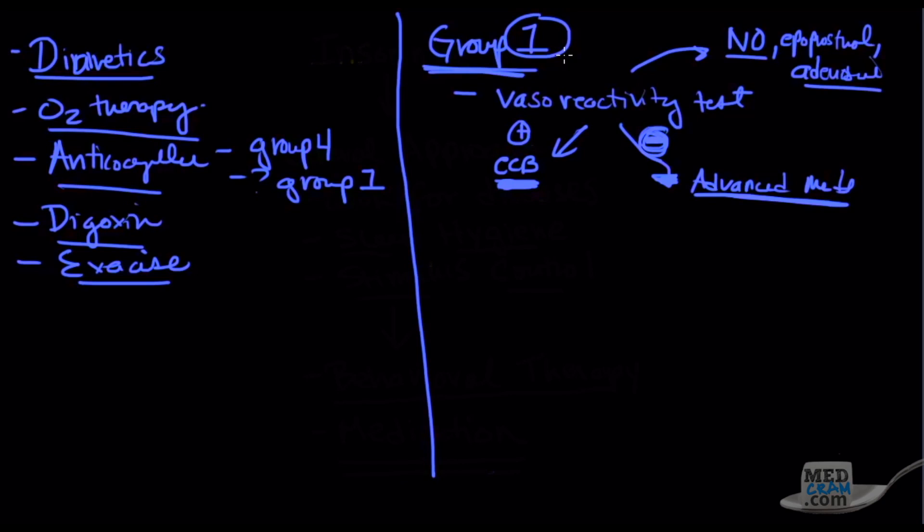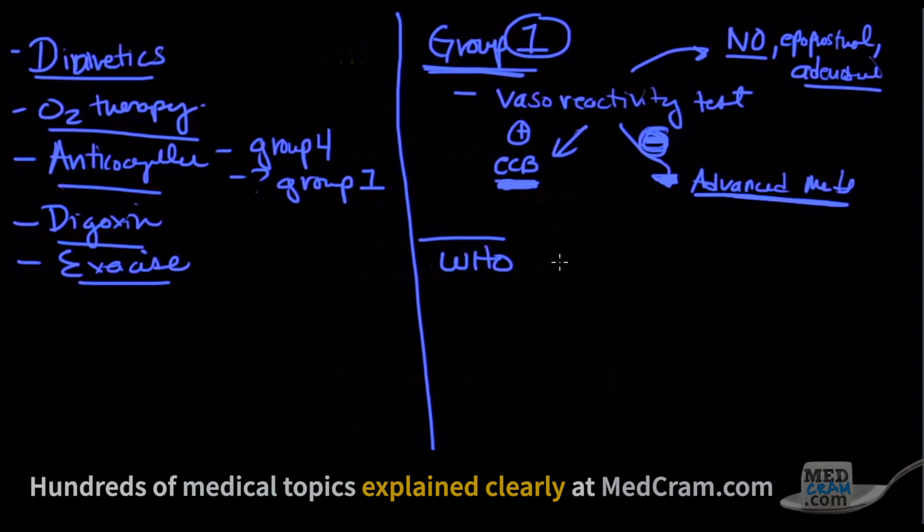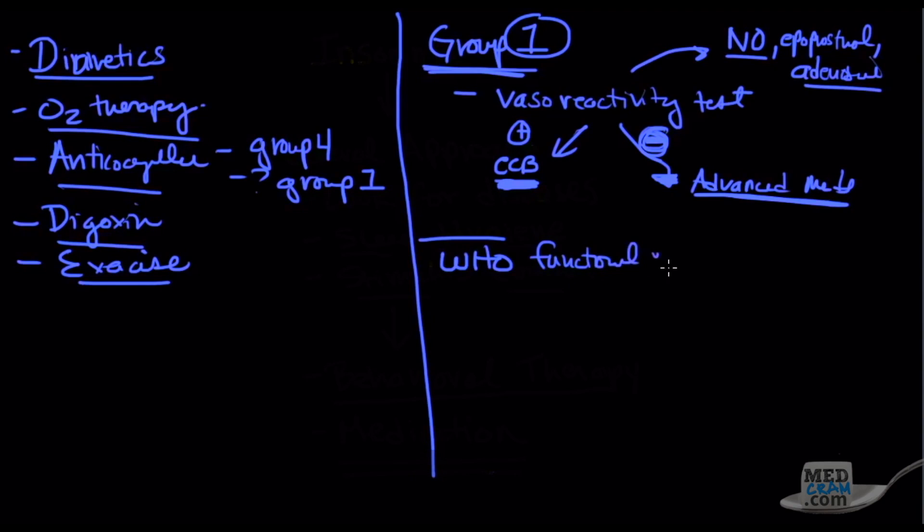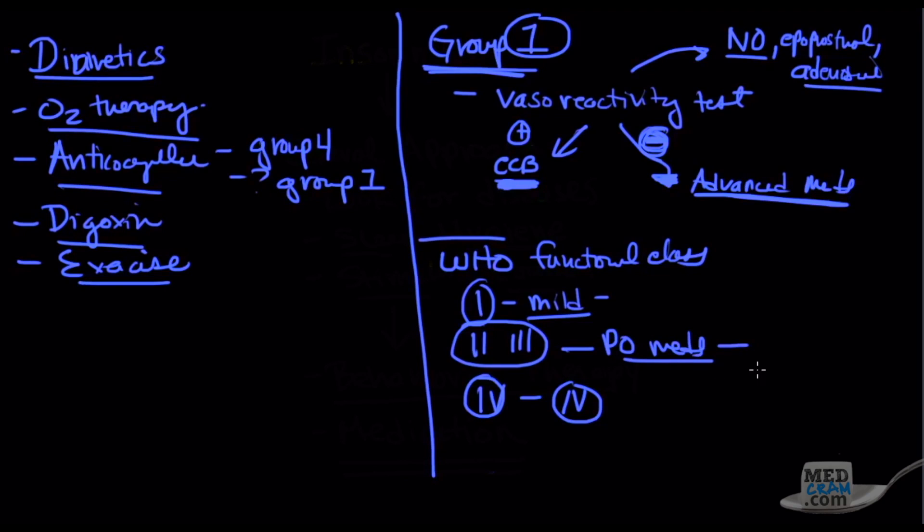The thing that's going to determine what medication they get is to determine how sick they really are, and that's determined by a WHO functional class. There's functional class one, which is the most mild, and they typically don't need medications, they can be monitored. Then there's class two and class three, and these are where most of the medications are actually started. Then there's class four, which is the most severe, and these are usually given IV. The way I remember it is that class IV should be given IV. Class one doesn't need medications orally, and the ones in the middle are given PO meds.